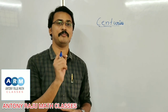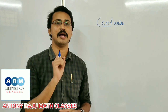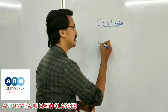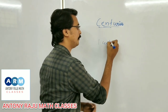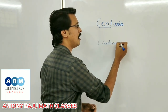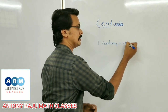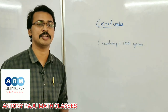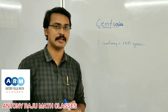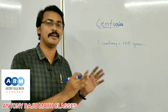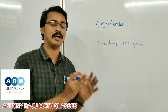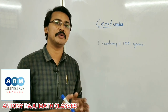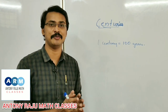1 century means 100 years. 1 century is equal to 100 years. But if you have 100 years, how many leap years are there? You will find the answer is 25.